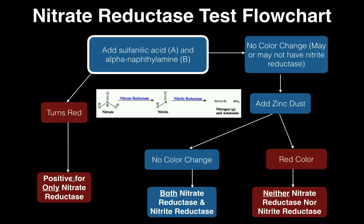We did inoculations for the nitrate reductase test or nitrate broth, put it in the incubator, and now we're going to take it out and start running results. The first thing we do is add sulfanilic acid and alpha-naphthylamine. Depending on where you're taking this course, sulfanilic acid is sometimes called solution A and alpha-naphthylamine solution B. Your manual says to add 16 drops of each — 16 drops of sulfanilic acid and 16 drops of alpha-naphthylamine.